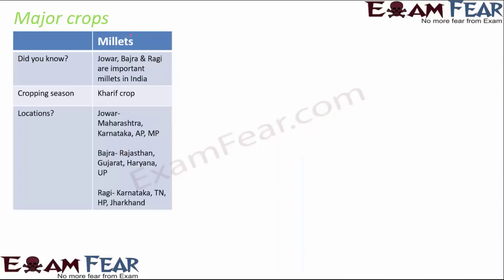Now we talk about millets. Millets are coarse grains, but they have very high nutritional value. Examples include jawar, bajra, and ragi. They are very nutritious — doctors recommend millets for children's early years and for weight loss programs, as they do not contain fat or cholesterol.